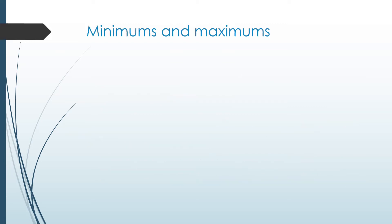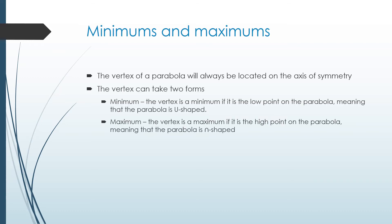Let's talk about minimums and maximums. The vertex of your parabola will always be located on your axis of symmetry. The vertex can take one of two forms: it's either a minimum, meaning it's a low point of the parabola, and that means the parabola is smile shaped. If it's a maximum, the parabola is frown shaped and it's the high point.